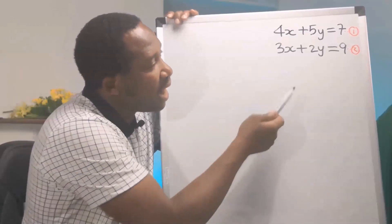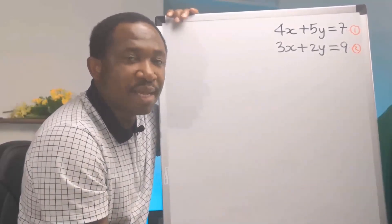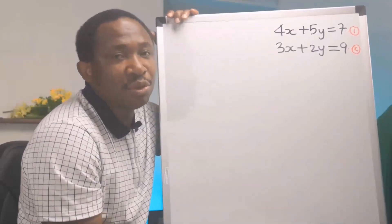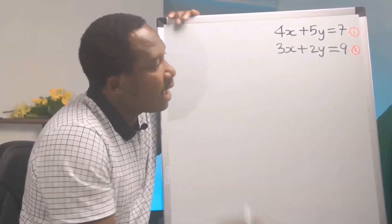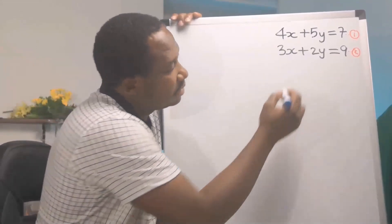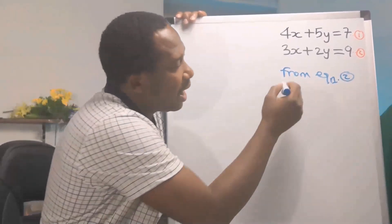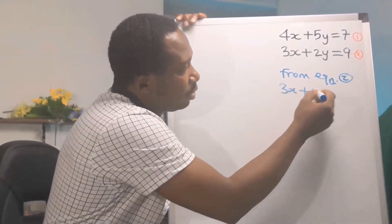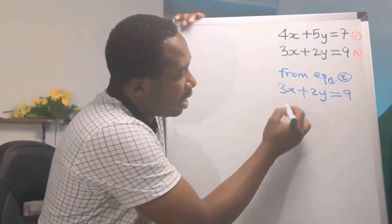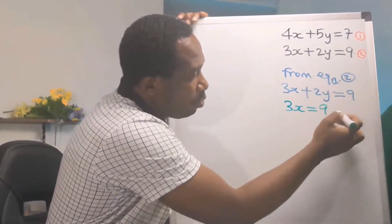That means I will choose either equation 1 or equation 2 to make x or y the subject. I will choose equation 2 and make x the subject. From equation 2 we have 3x + 2y = 9, and we now have that 3x = 9 minus 2y, moving 2y to the other side.